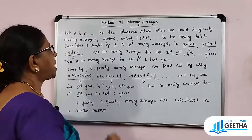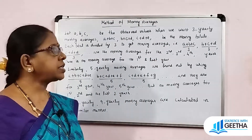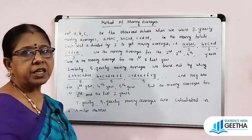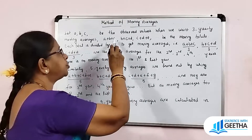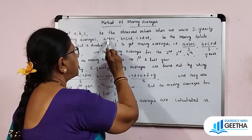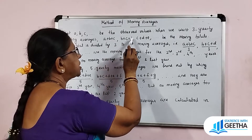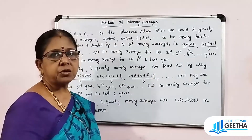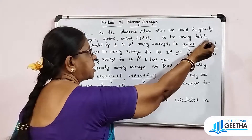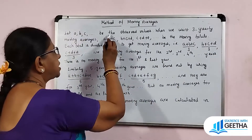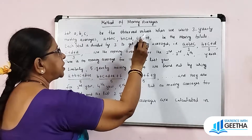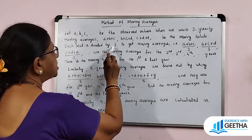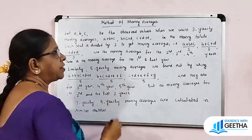When we want 3-yearly moving averages, we need moving totals. That means A+B+C, then B+C+D, C+D+E, etc. We need moving totals placed at the center of the year — 2nd year, 3rd year, 4th year — and each total is divided by 3 to get the moving averages.